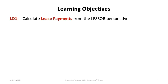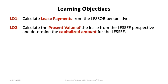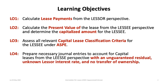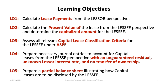This video has five key learning objectives. First, calculate the lease payment from the lessor's perspective. Second, calculate the present value of a lease from the lessee perspective and determine the capitalized amount. Third, assess all relevant capital lease classification criteria for the lessee under ASPE. Fourth, prepare the necessary journal entries to account for capital leases from the lessee perspective with an unguaranteed residual, unknown lessor interest rate, and no transfer of ownership. Last, prepare a partial balance sheet illustrating how capital leases are disclosed by the lessee.